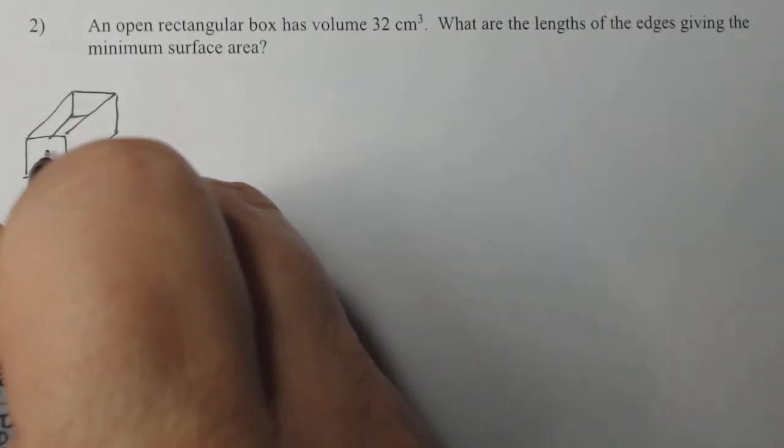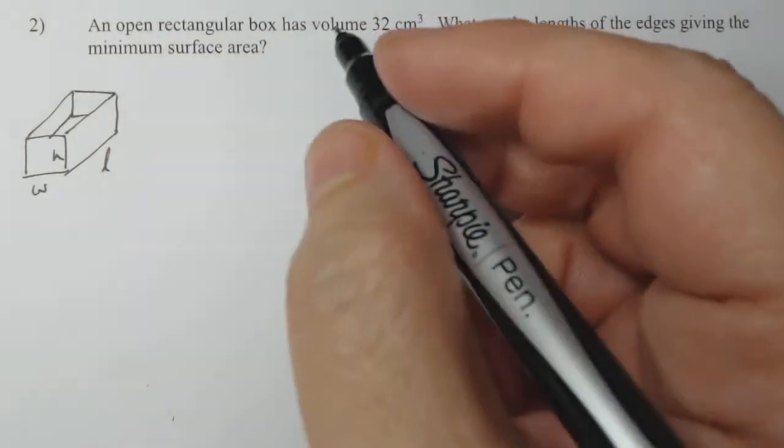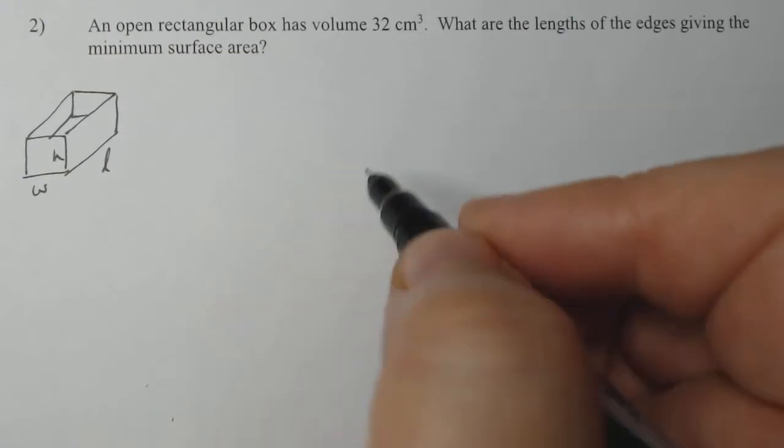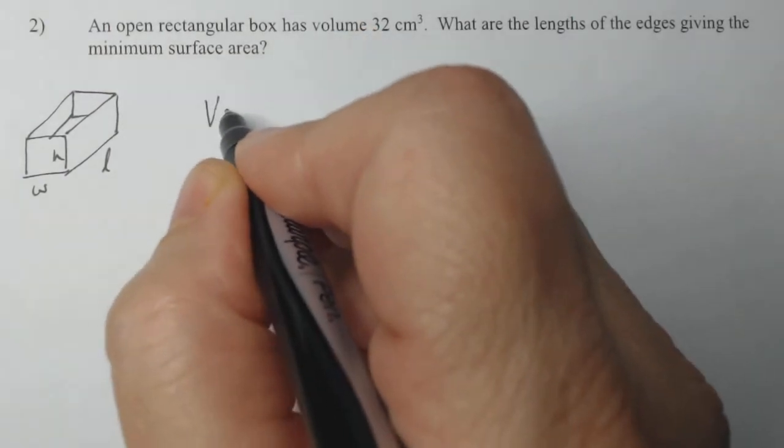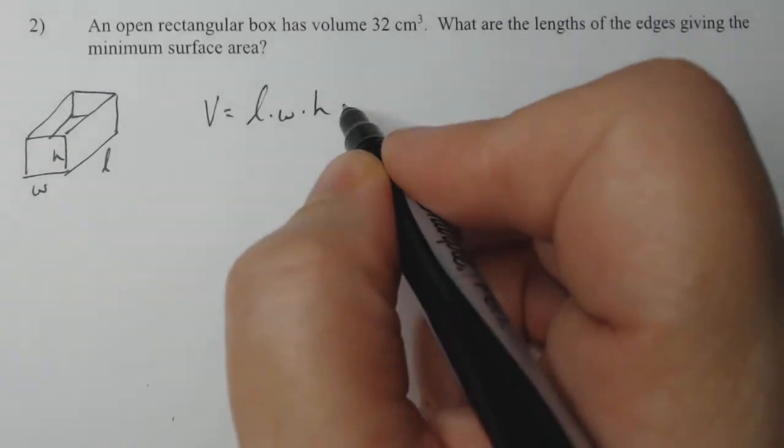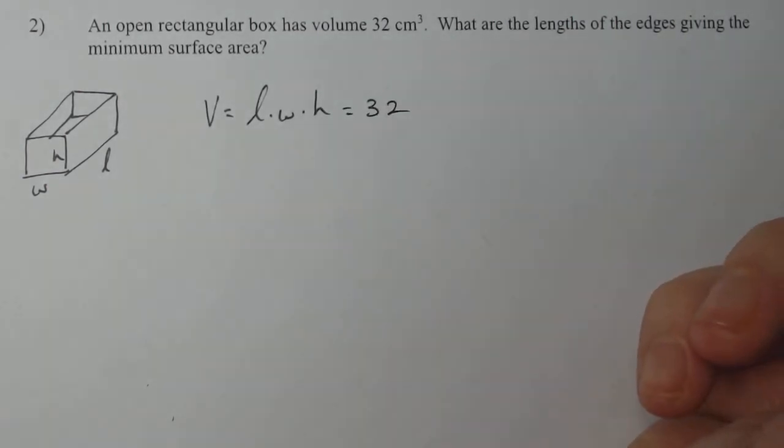Label width, length, height. You can use X, Y, Z if you want. I don't really care, but I like to use whatever is corresponding to the problem. So then I know the volume of a box is length times width times height, whether it has a top or not. And according to this problem, that's supposed to be 32 cubic centimeters.